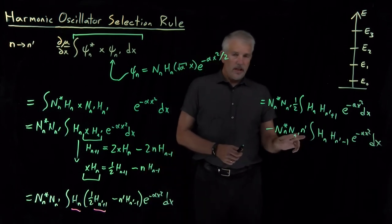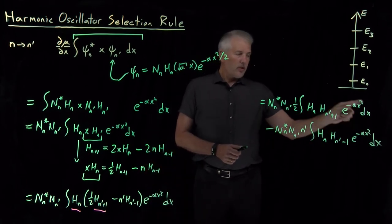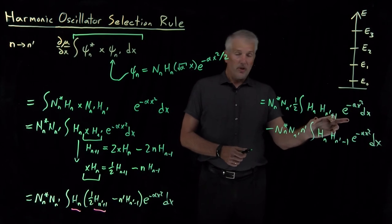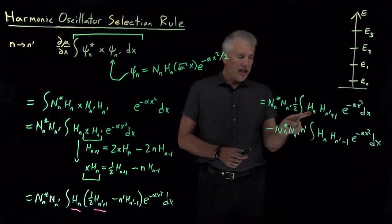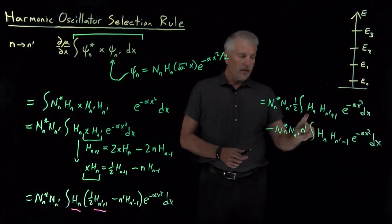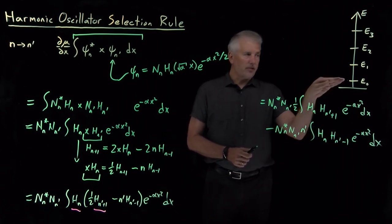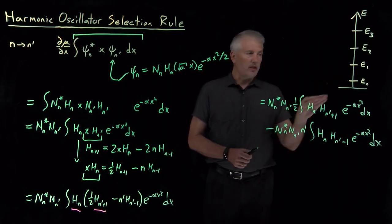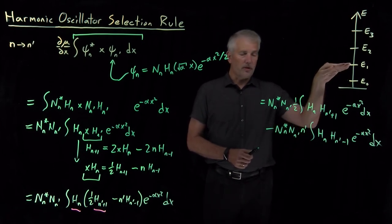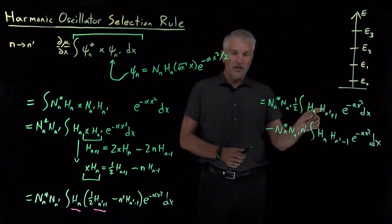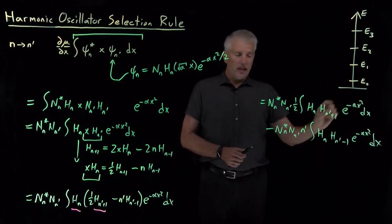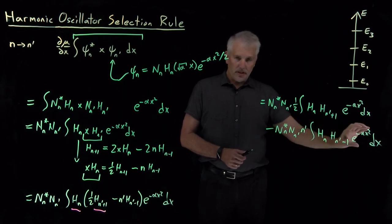So the next step is to say this looks an awful lot like an overlap integral between the n-th and the n prime plus 1th wave function. But I know that different harmonic oscillator wave functions are orthogonal. The 0th wave function is orthogonal to the 1st and to the 2nd and to the 3rd. If these are different wave functions, this integral is going to disappear. If these are different wave functions, this integral is going to disappear.